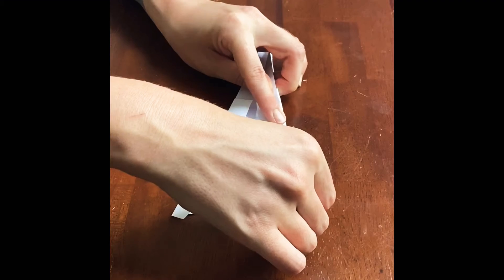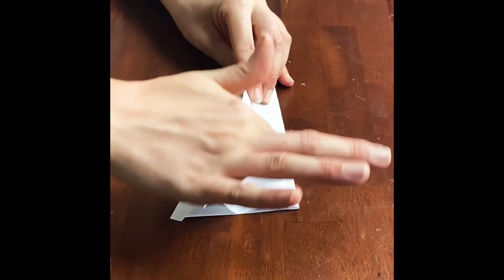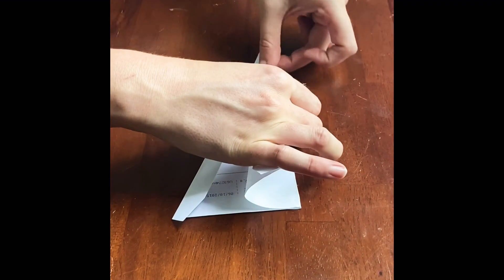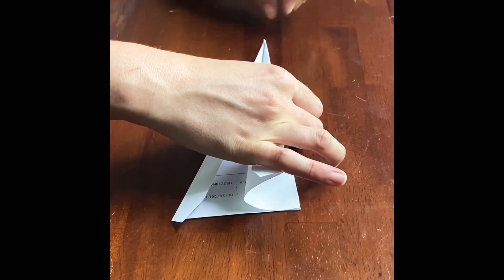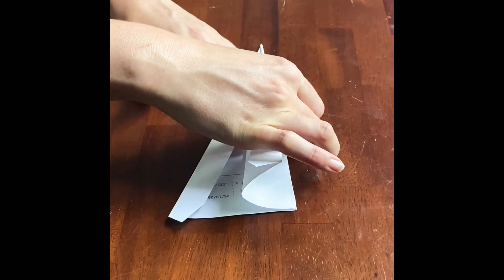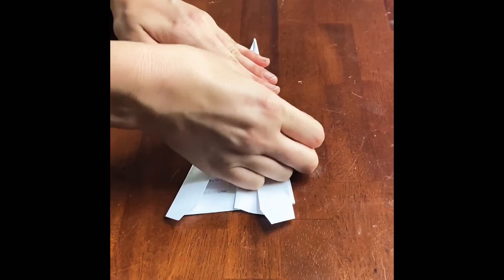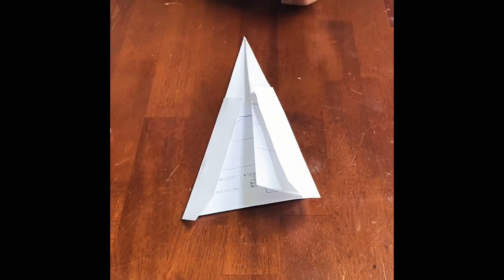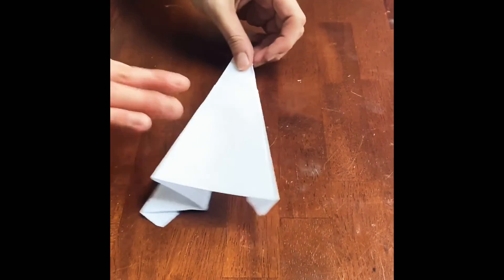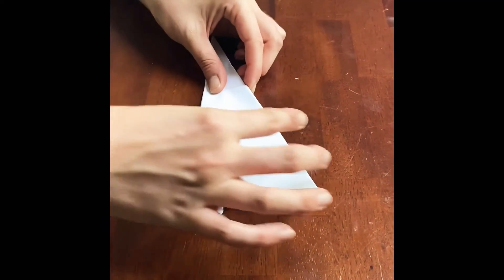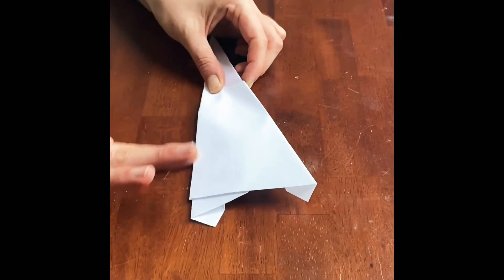Now to make our wings, you're gonna fold this out down till this edge matches this edge, making sure your point is nice and pointy. Then flip over and repeat on this side, bring this edge to this edge.